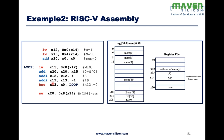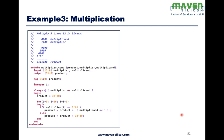At the end, when x13 reaches 0, execution reaches the store word instruction. Whatever value is in x20 (the sum) is written back into memory. The location is x14 (200) plus offset 8, which is 208. So the sum is stored at location 208.